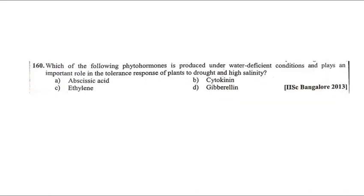Next question: which phytohormone is produced under water-deficient conditions? Abscisic acid (ABA) is the hormone produced under water-deficient conditions.